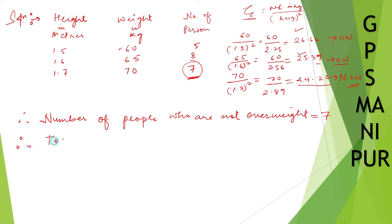Total number of persons. So total number of person, you just calculate this one, 5 plus 8 plus 7. 8 plus 5 is 13, 13 plus 7 is 20. So total number of persons is 20.